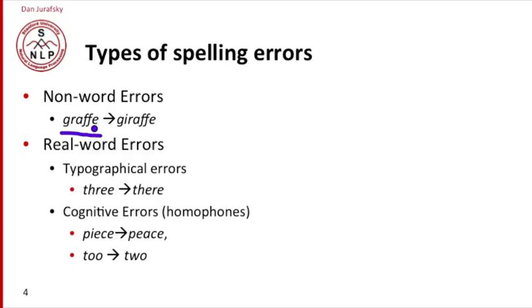By contrast, real-word errors are errors in which the resulting misspelling is actually a word of English, and that makes them somewhat harder to detect. We can break up real-word errors into ones produced by typographical processes — the user meant to type 'three' and typed 'there' — or cognitive errors where the user meant to type a word like 'piece' and instead typed a homophone, or T-O-O instead of T-W-O. In both cases, what's produced is a real word of English, but by modeling the differences between these kinds of errors, we might come up with better ways of fixing them both.